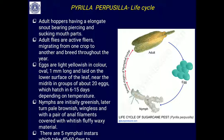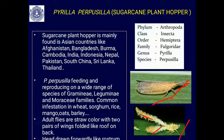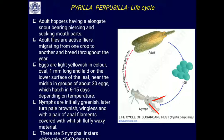The eggs are light yellowish in color, about one millimeter long, and are laid on the lower surface of the leaf near the midrib. Eggs hatch in six to fifteen days depending on temperature. The nymphs are initially greenish, later turning to pale brownish, and are wingless. They have a pair of anal filaments and the body is covered with fluffy waxy material. There are five nymphal instars, and the larval period takes about 50 to 60 days to develop into an adult.